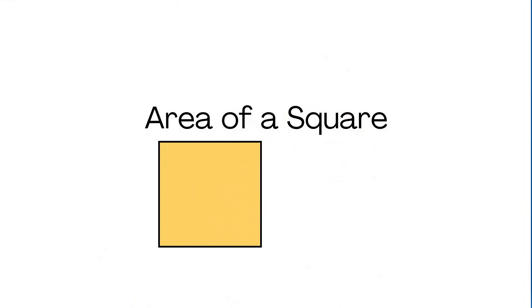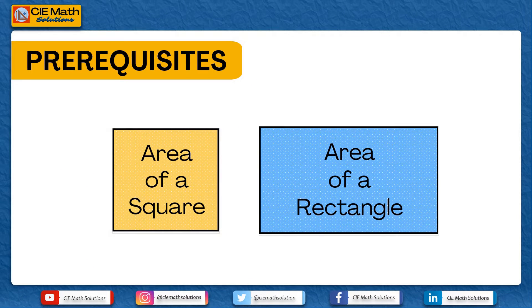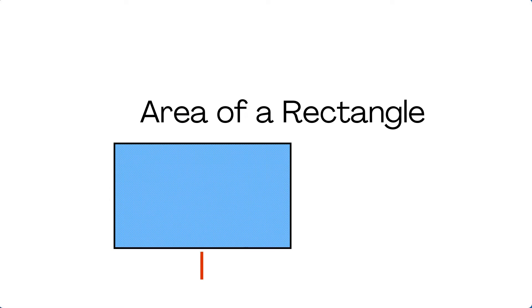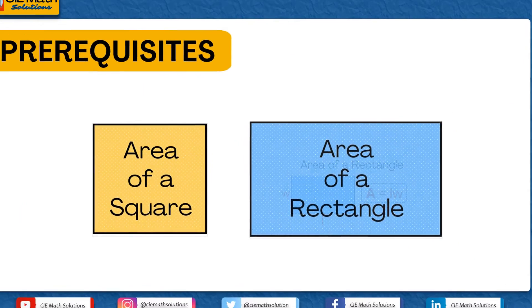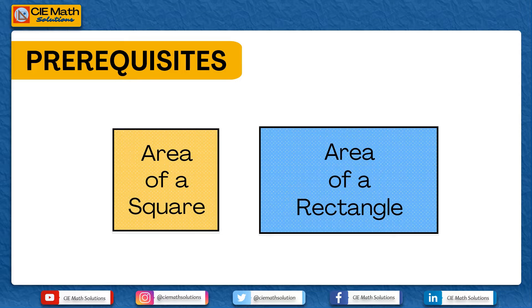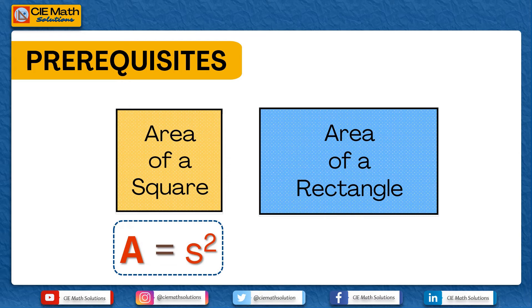For the area of a square with side s, it is given by A equals s squared. On the other hand, for the area of a rectangle, the area is given by A equals lw. To summarize: the area of a square is A equals s squared, and the area of a rectangle is A equals lw.